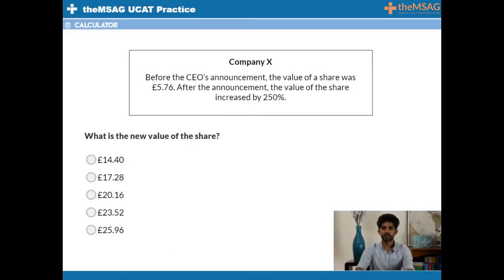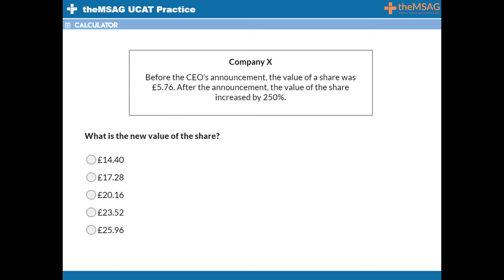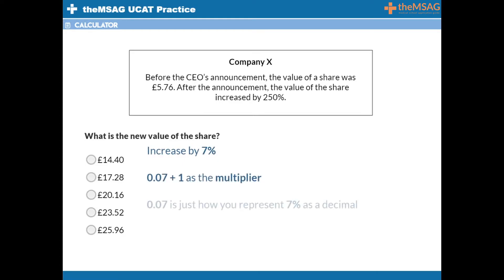Before the CEO's announcement, the value of a share was £5.76. After the announcement, the value of the share increased by 250%. What is the new value of the share? Don't be intimidated just because it's a large percentage increase — we follow the same steps as before. Remember, to increase by 7% we added 0.07 to 1, giving us 1.07 as the multiplier. 0.07 is just how you represent 7% as a decimal.